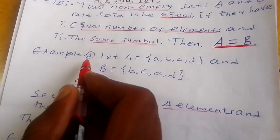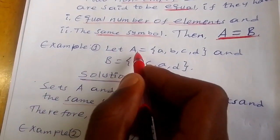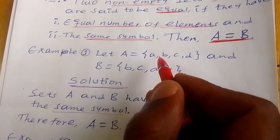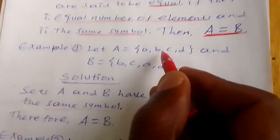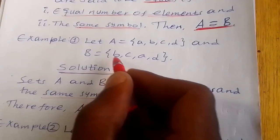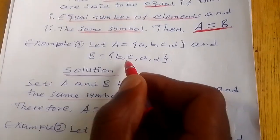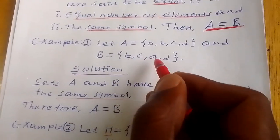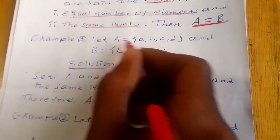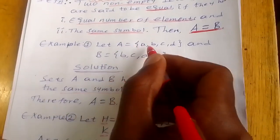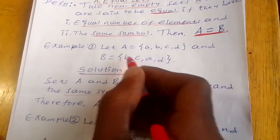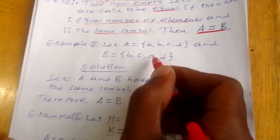Example one: Let set A equal to {A, B, C, D} and set B equal to {B, C, A, D}. What does it mean? Set A contains A, B, C, D and set B contains B, C, A, D.